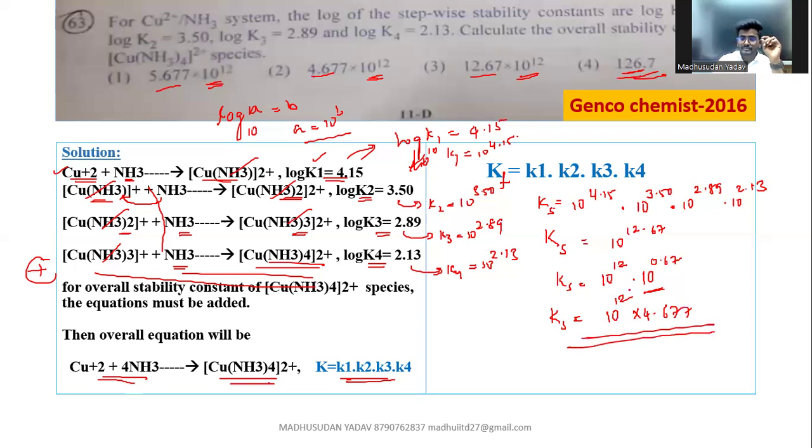So you may guess up to 10 power 12 values. But there in the 10 power 12, there are three options. So try to calculate this value accurately. Then only you will get the correct answer.